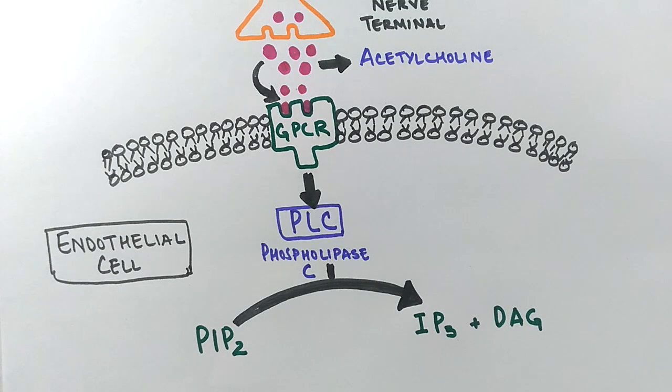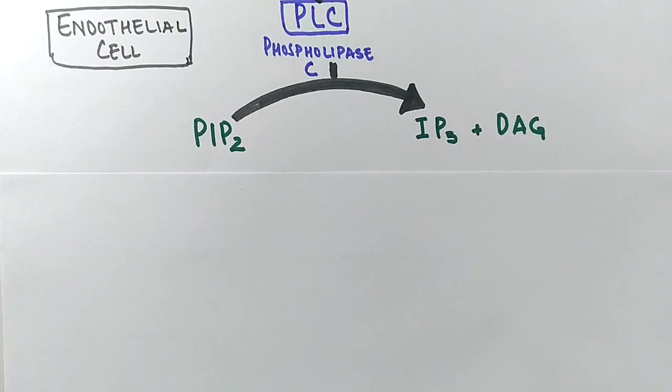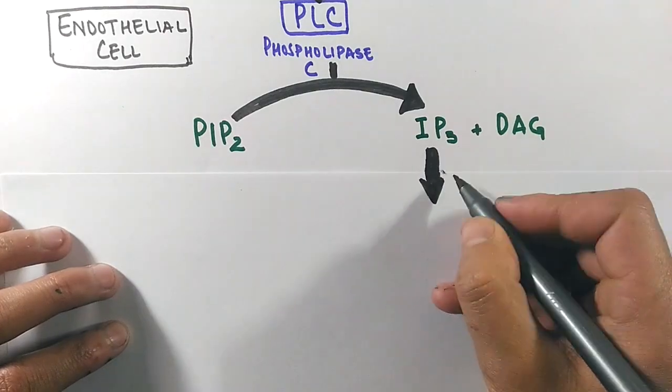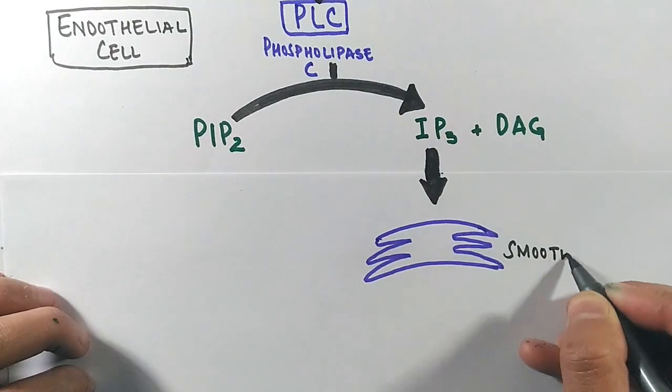This DAG remains with the cell membrane, while this IP3 is a soluble form in cytoplasm. The IP3 is a secondary messenger which transports towards the IP3 receptors on smooth endoplasmic reticulum.